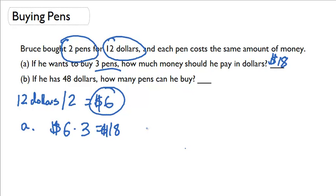The question is, if he has $48, how many pens can he buy? Well, if we know that he has $48, we can divide 48 by six because that's the cost of each pen to find out how many pens he can buy. When we divide, we figure out that he can buy exactly eight pens with $48.